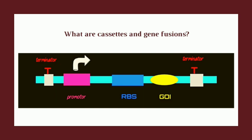What are cassettes and gene fusions in a vector? The expression signals — promoter, RBS, and terminator — together form a so-called cassette, since they are assembled together in the same order as mentioned.